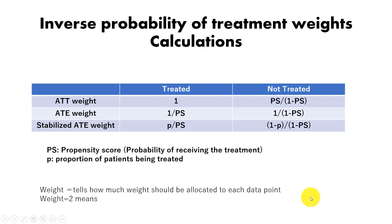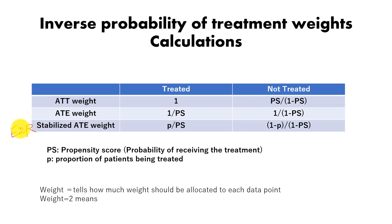There are several options to compute inverse probability of treatment weights: ATT weights, ATE weights, and stabilized ATE weights. EZR performs stabilized ATE weights.